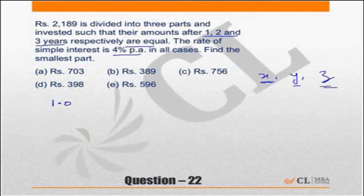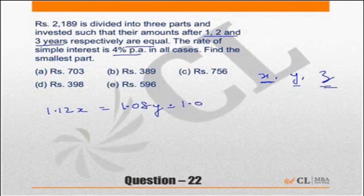So all 3 of them are invested such that the amount after 1, 2 and 3 are equal. So obviously the smallest part will have to be invested for 3 years while the biggest part will be invested only for 1 year. This is what the question is saying.